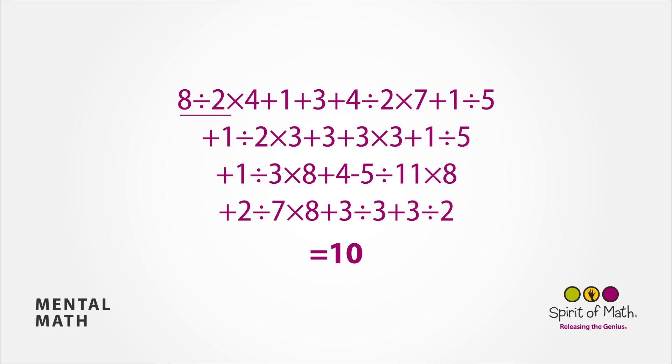Starts off with 8 divided by 2, which is 4, multiply that by 4, gives you 16. Add 1 and then add another 3, gives you 20 and add 4 is 24. Divide that by 2, gives you 12, multiply that by 7, is 84 and add 1, is 85.